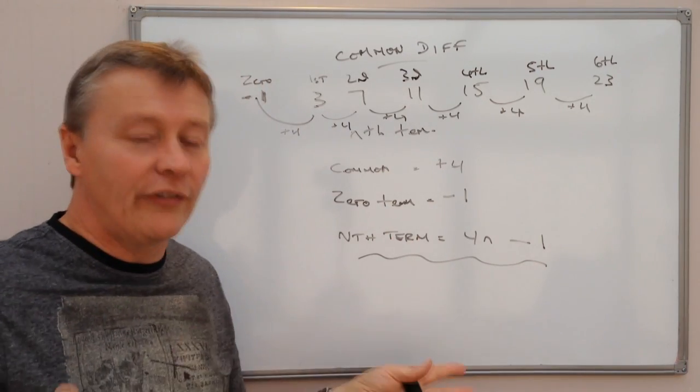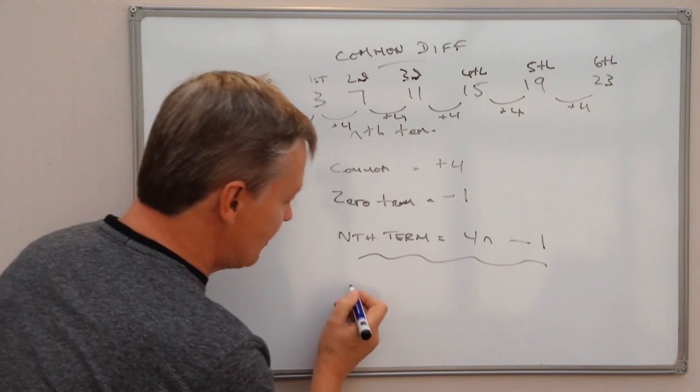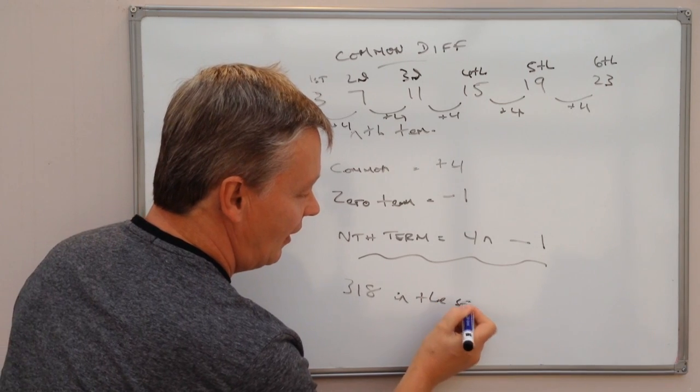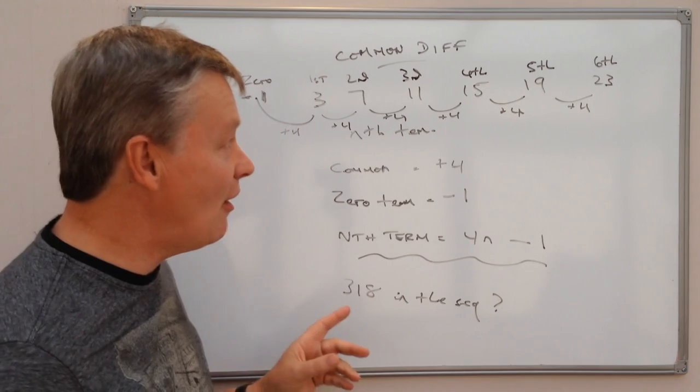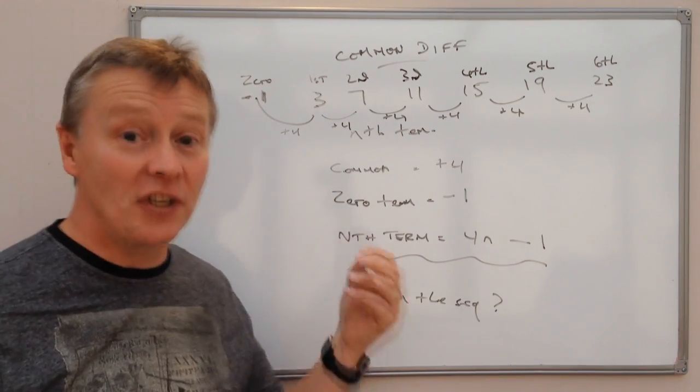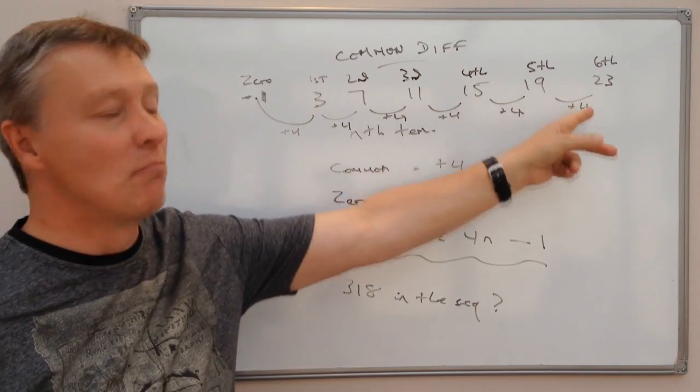So one of the things that might be asked in the exam is, is 318 in the sequence? Is it in the sequence? No, it's not. Because two things actually. The first thing is 318 is an even number, and if you notice these are all odd numbers.